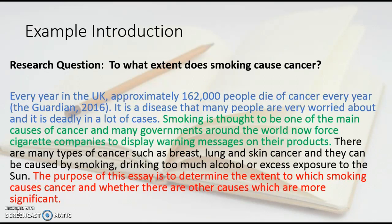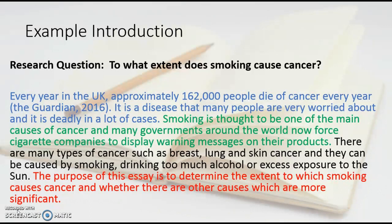Looking at the blue statement: 'Every year in the UK, approximately 162,000 people die of cancer every year.' I've cited the Guardian with an in-text citation because this is where I found the information — I didn't do this research, somebody else did, so I must tell the reader exactly where I got it from. Then I said it's a disease that many people are worried about and it's deadly in a lot of cases, trying to make it relevant to the people reading my essay. Then in green: 'Smoking is thought to be one of the main causes of cancer, and many governments around the world now force cigarette companies to display warning messages on their products' — making it relevant to today, as this wasn't always done before.